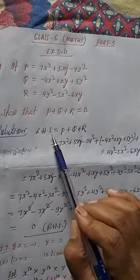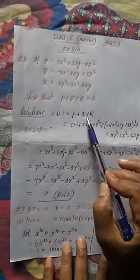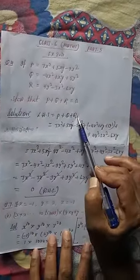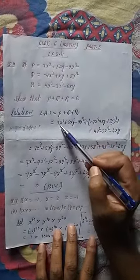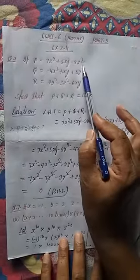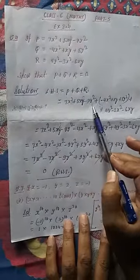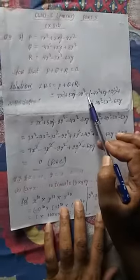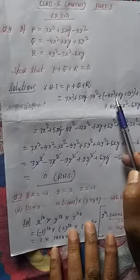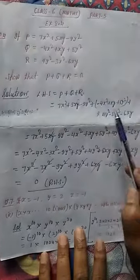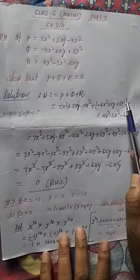LHS is equal to P plus Q plus R. Now we have to put the value of P. What is the value of P, student? So: 7x squared plus 5xy minus 9y squared. Now plus sign here. What is the value of Q, students? So: minus 4x squared plus xy plus 5y squared.